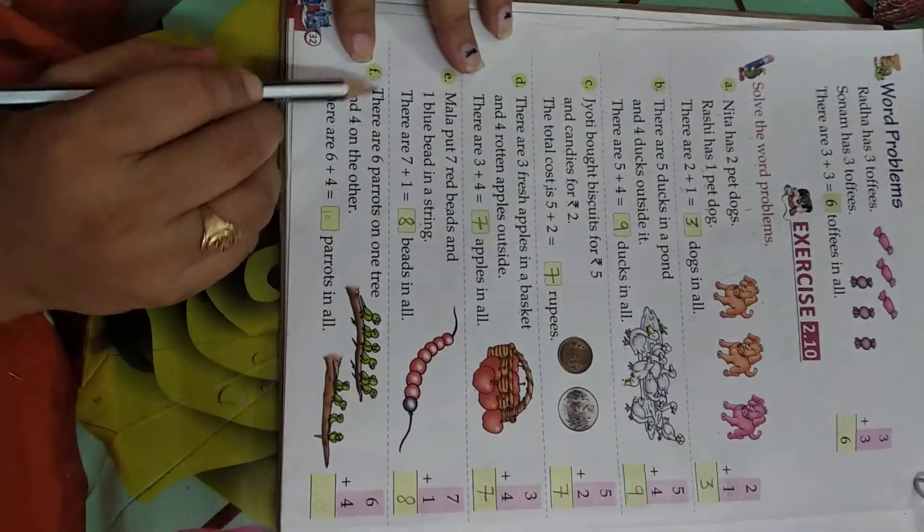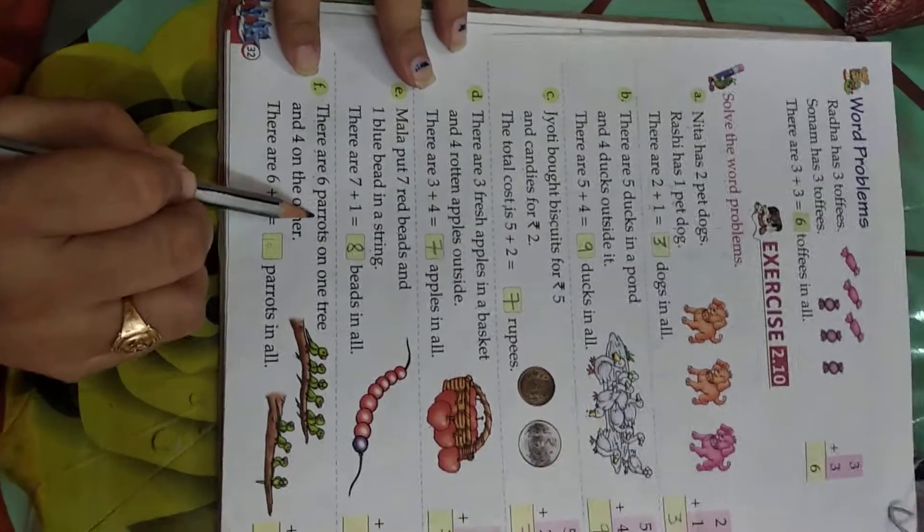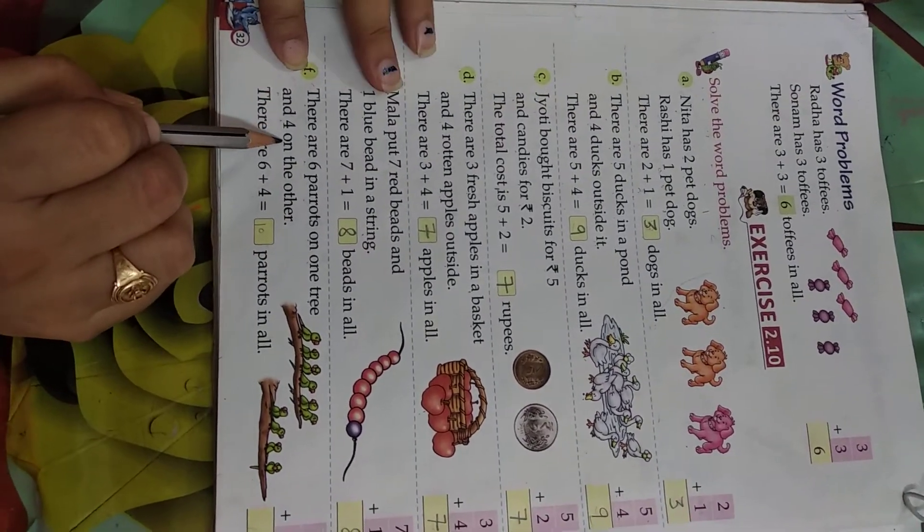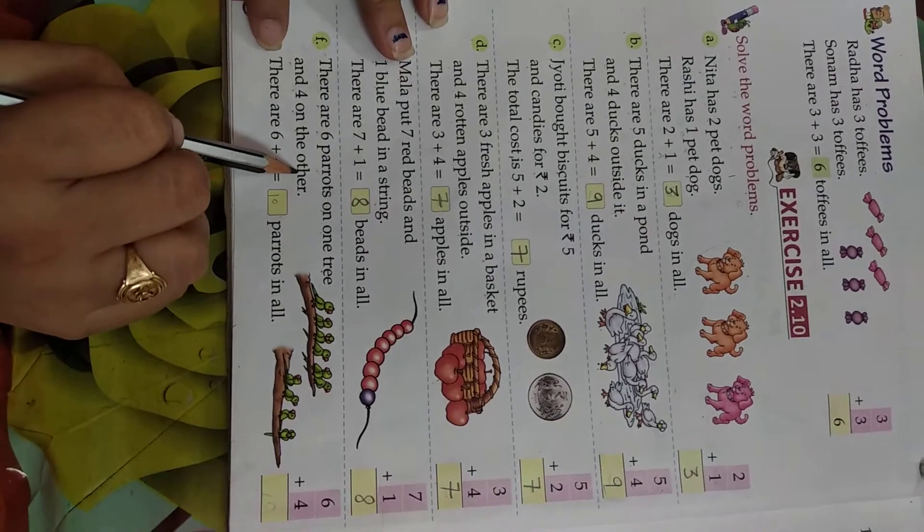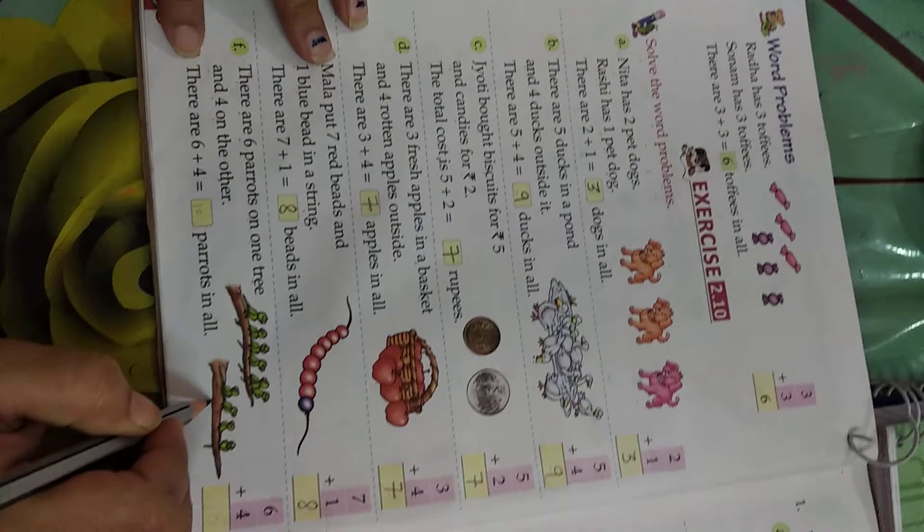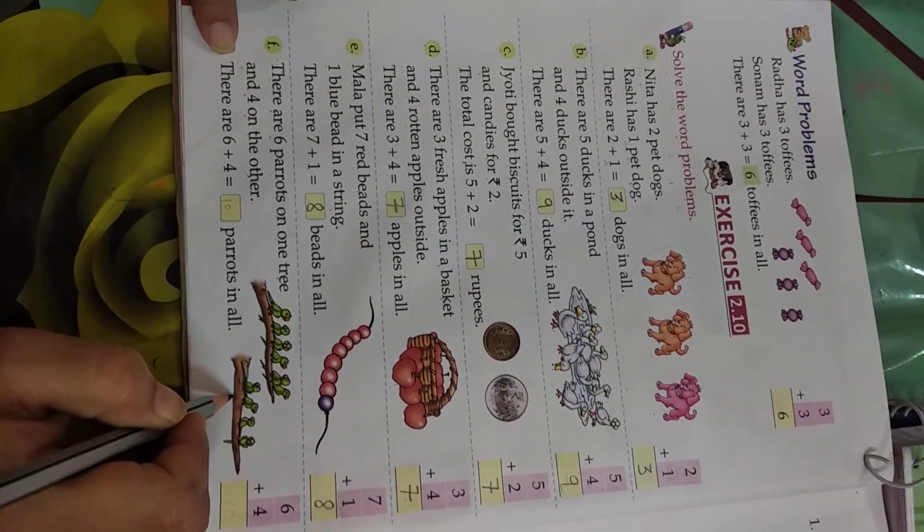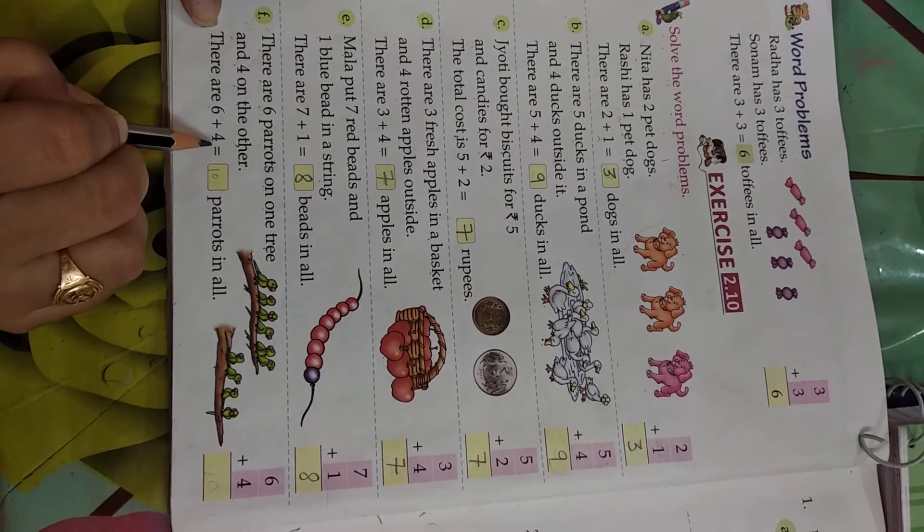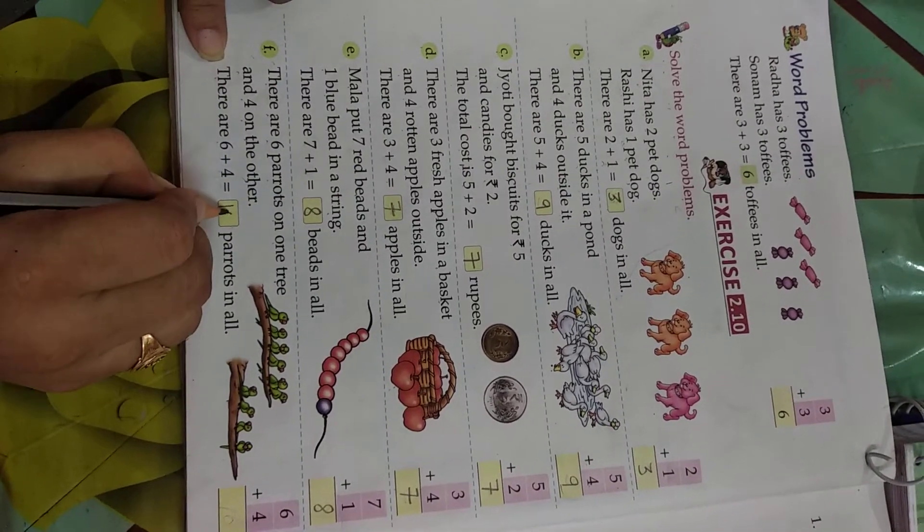Now, F. There are six parrots on one tree and four on another. How many parrots in the branches of trees? When we add them, we get six plus four is equal to ten.